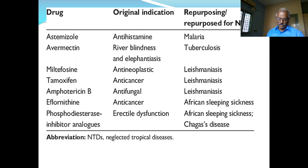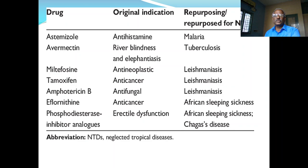Some examples of repurposed drugs: astemizole, a once-daily non-sedating antihistamine, is now repurposed for malaria. Tamoxifen, an anti-cancer drug (estrogen receptor antagonist), is now used for the treatment of leishmaniasis. Amphotericin B, an antifungal antibiotic, is also used for leishmaniasis. These are drugs repurposed for neglected tropical diseases.